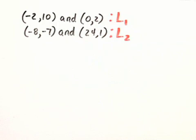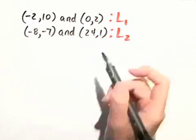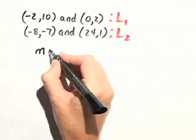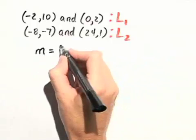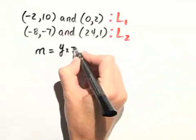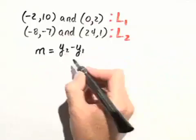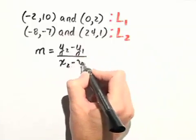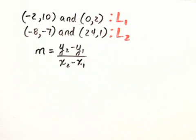So let's first find the slope of line 1. We have the general slope formula: m equals the difference of the y-coordinates, y sub 2 minus y sub 1, over the difference of the x-coordinates, x sub 2 minus x sub 1.